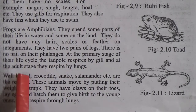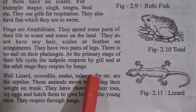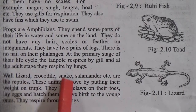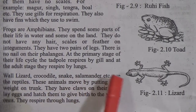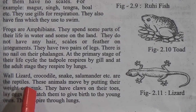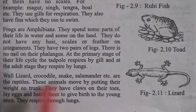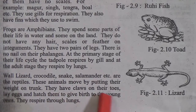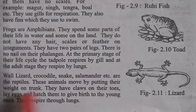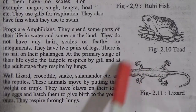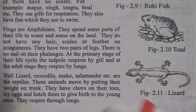Wild lizards, crocodiles, snakes, salamanders, etc. are reptiles. These animals move by putting their weight on their trunk. They have claws on their toes, lay eggs to give birth to young ones, and respire through lungs.